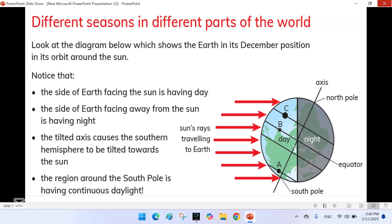Different seasons in different parts of the world. Look at the diagram below which shows the earth in its December position in its orbit around the sun.